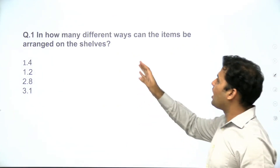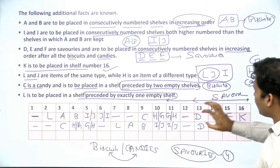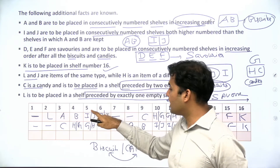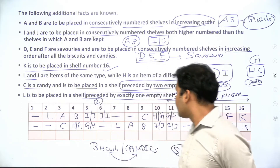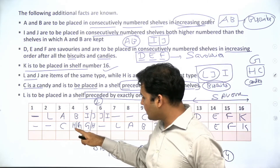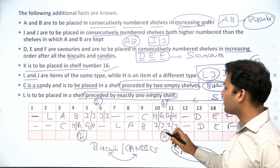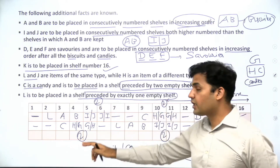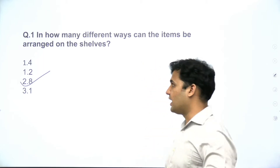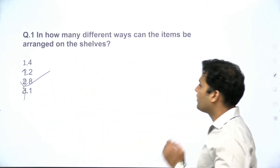Question 1 asks: in how many different ways can the items be arranged on the shelves? Analyzing the possibilities: exchanging I and J gives 2 arrangements, exchanging H and G gives 2 more. In the second main case (candies first), exchanging H and G gives 2 more, and exchanging I and J gives 2 more. So 2 × 2 × 2 = 8 total arrangements. The answer is 8.